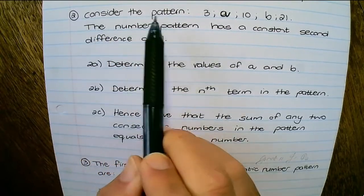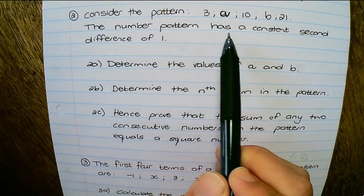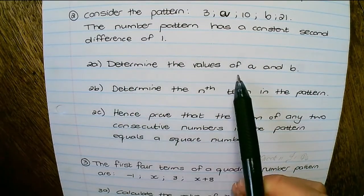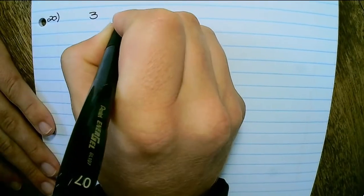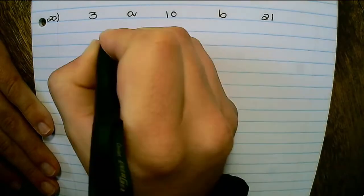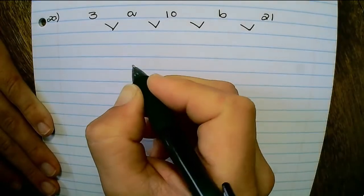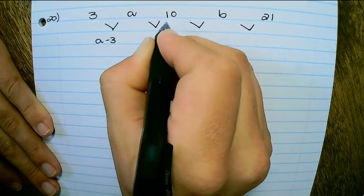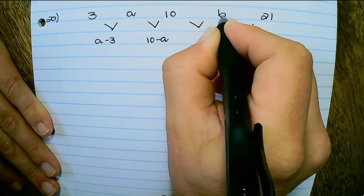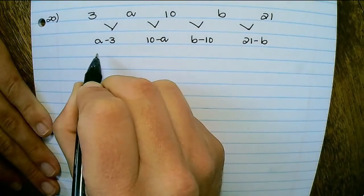Our second question asks us to consider the pattern 3, a, 10, b, and 21. The number pattern has a constant second difference of 1. To find a and b, let us find the first differences: a minus 3, then 10 minus a, next b minus 10, and lastly 21 minus b.